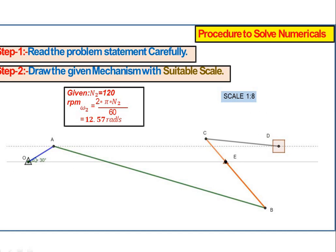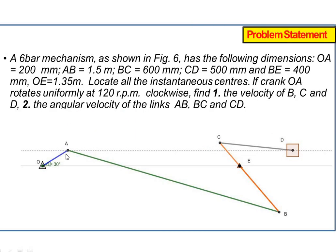First, we have to draw the space diagram. From point O, draw a horizontal line. At a distance of 1.35 m, mark point E. Then, at an angle of 30 degrees from O, draw a line and at a distance of 200 mm (OA), mark point A.